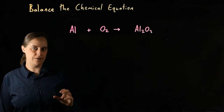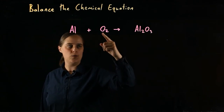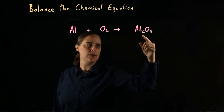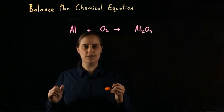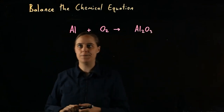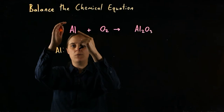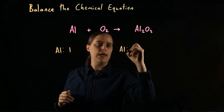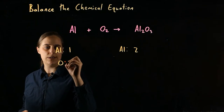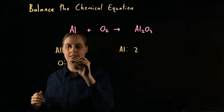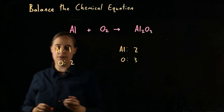This next problem is going to be a little more difficult. In our unbalanced equation, we have aluminum Al plus oxygen O₂ reacting to make aluminum oxide Al₂O₃. Our first step is always the same — count how many atoms of each element we have before versus after. Before the reaction, we have one atom of aluminum; after, we have two. Aluminum is not balanced. Before the reaction, we have two oxygen atoms; after, three. Neither element is balanced.